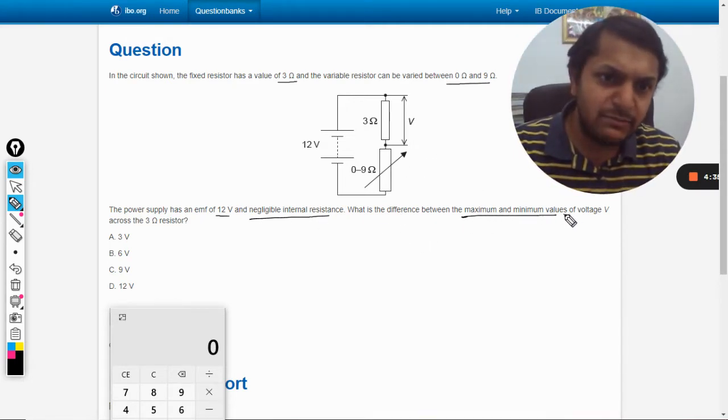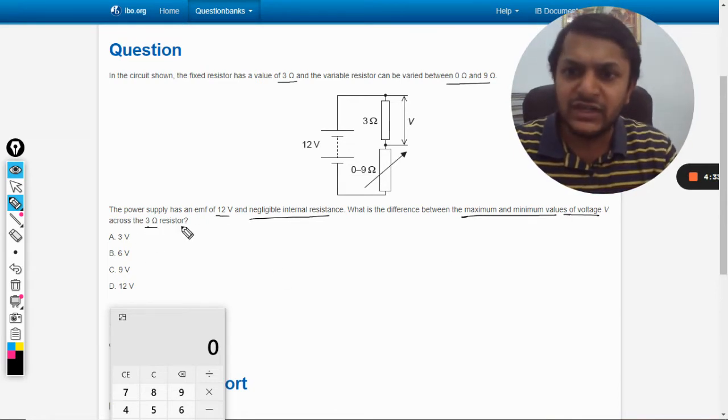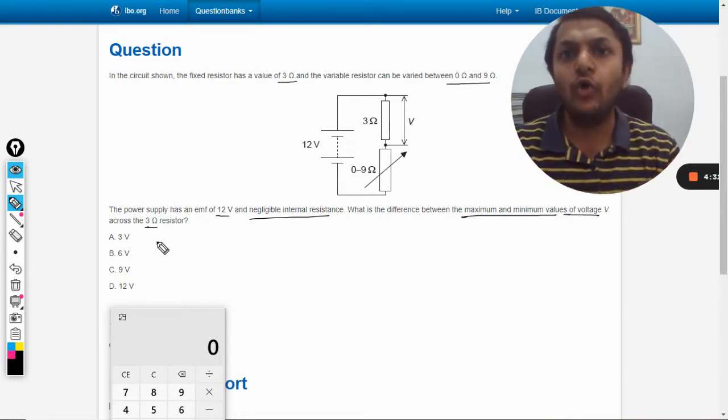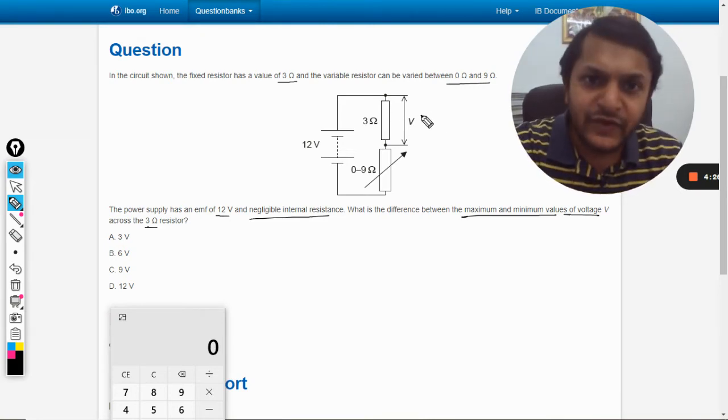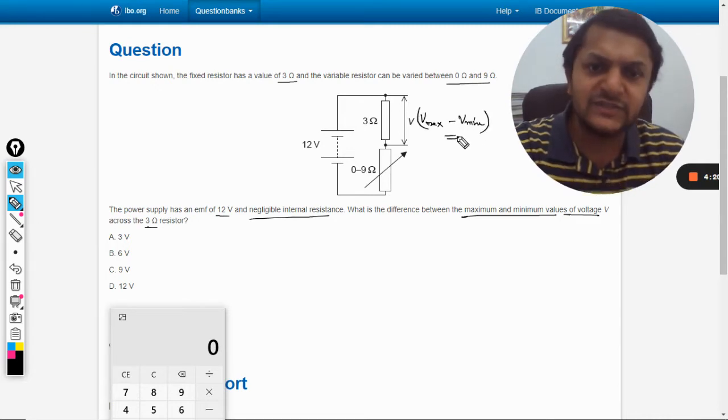What is the difference between the maximum and minimum value of voltage V across the 3 ohm resistor? So we have to find the maximum range, the V_max that is possible minus V_min that is possible. This is what we need to find.